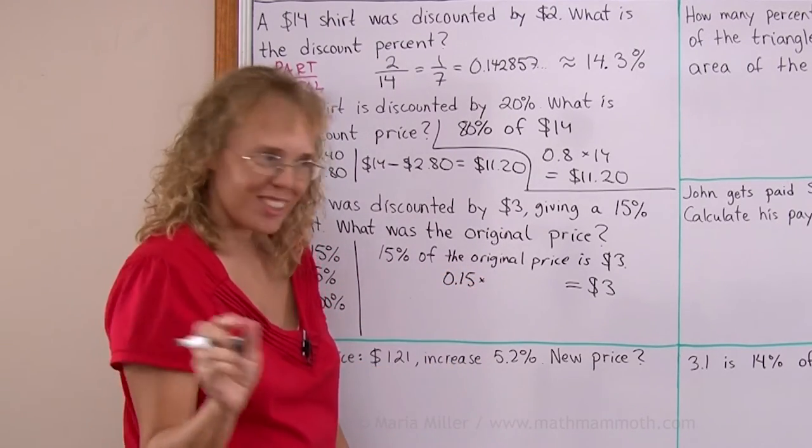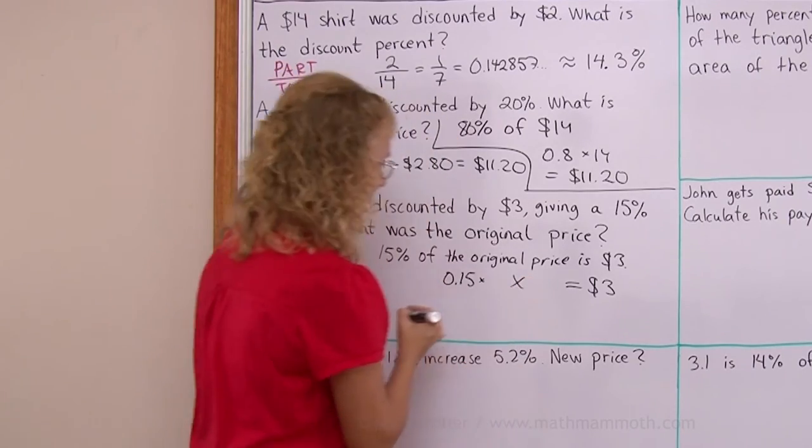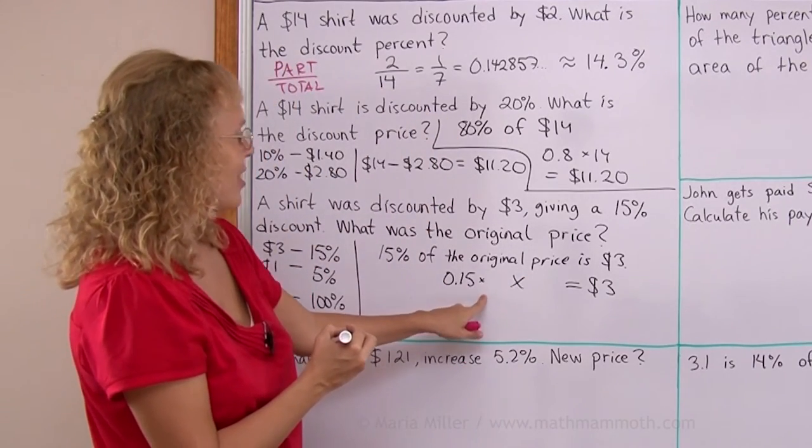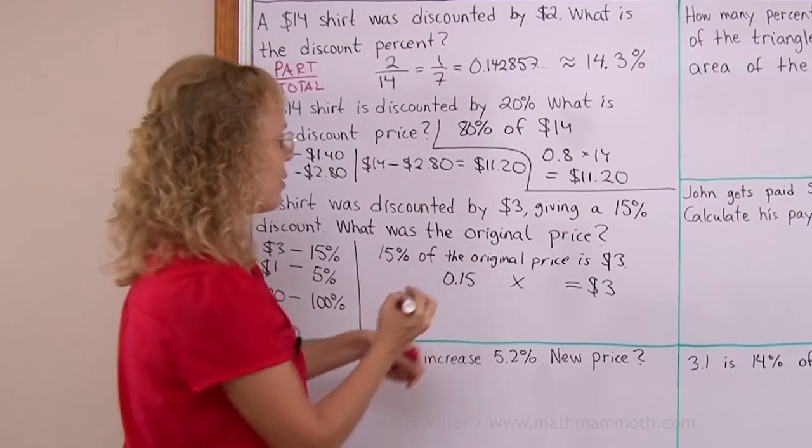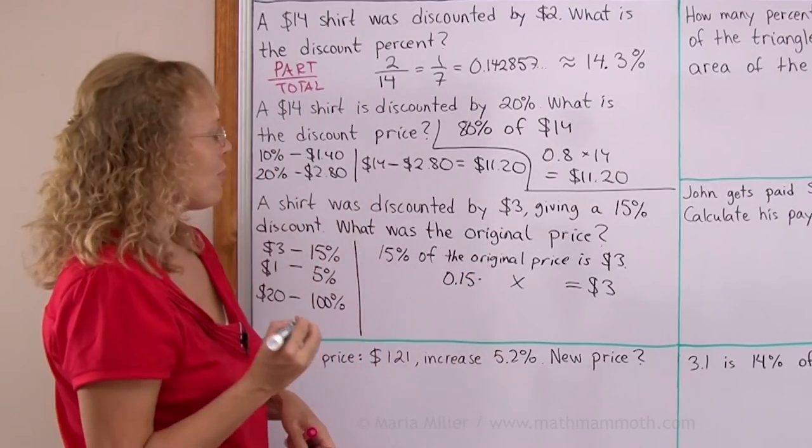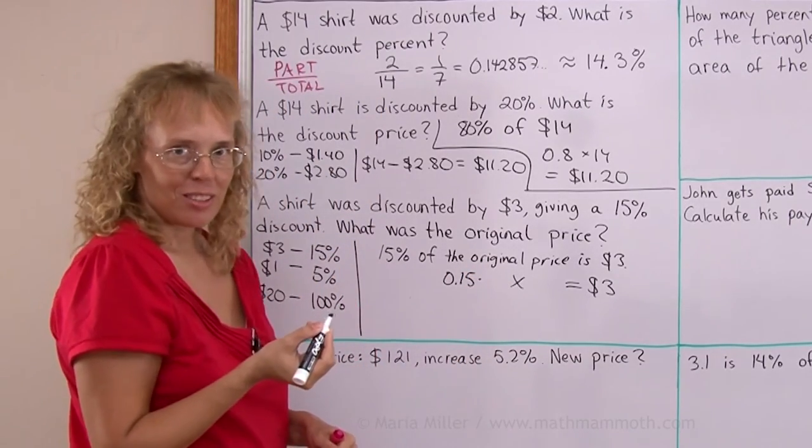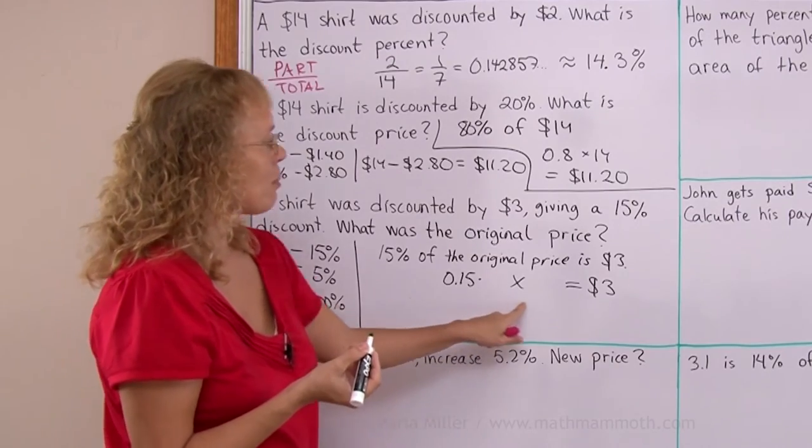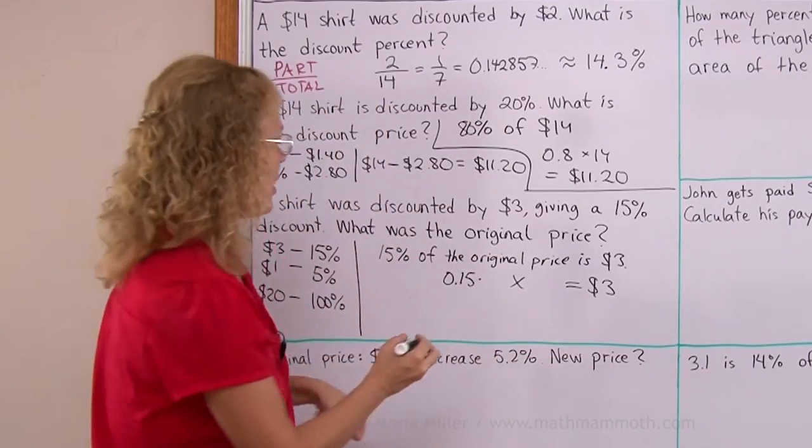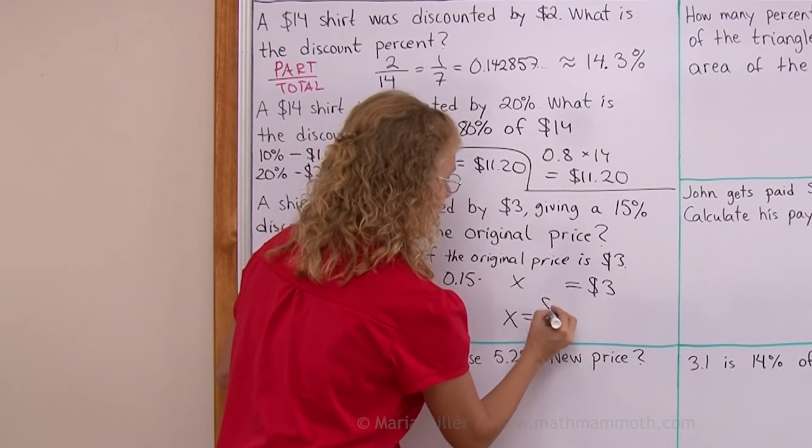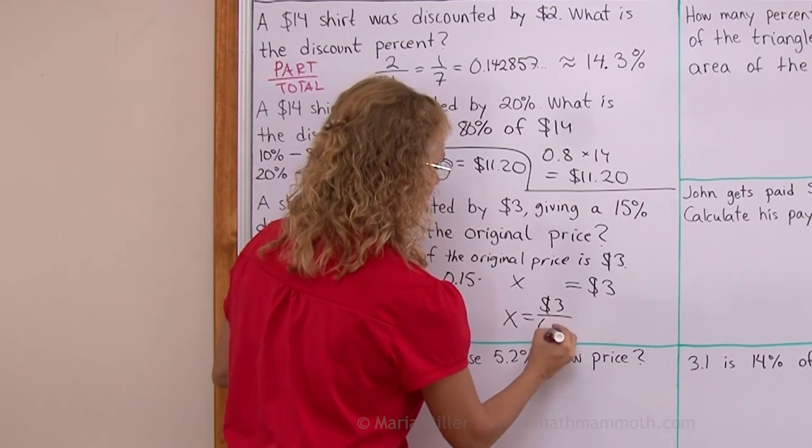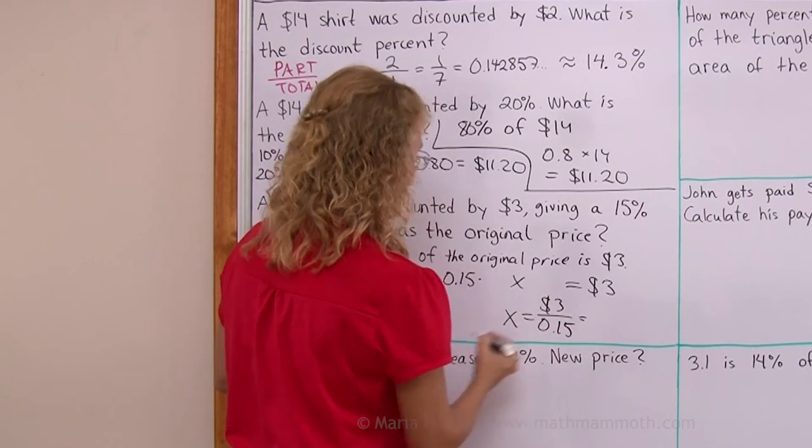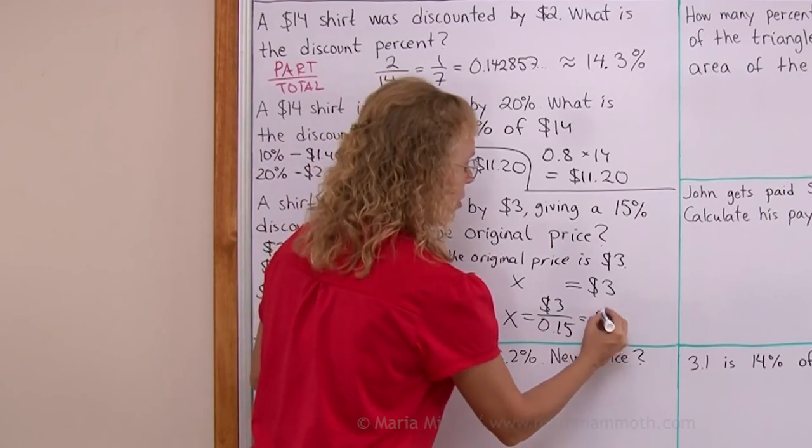The original price is my unknown, my x. So 0.15 times x equals $3. And then this simple equation is solved by dividing both sides by 0.15. So x equals $3 divided by 0.15. And that would be the same answer, of course, $20.